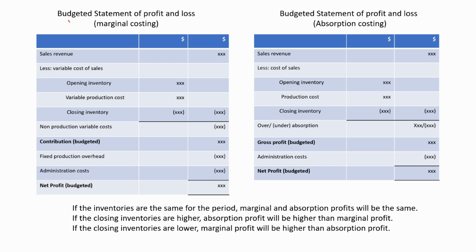These are the budgeted statements of profit and loss — one for marginal costing and one for absorption costing. These are the financial statements we prepared under budgeting. All of these values — sales revenue, variable cost of sales, contribution, non-production cost, and finally the net profit — are budgeted values. So what we have to do is use the variances in order to arrive at the actual profit.